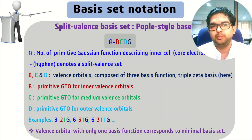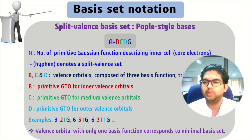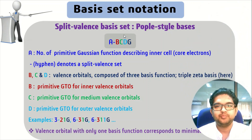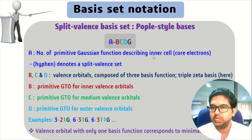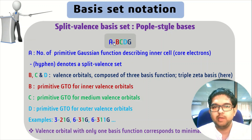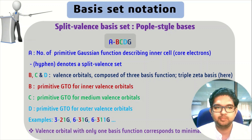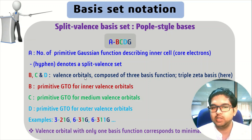The split valence basis set has a basic notation for the Pople style basis set. 'A' is the total number of primitive Gaussian functions describing the inner shell electrons, also called core electrons. The hyphen indicates the split valence — we are splitting the valence and core orbital electrons. Then we have B, C, D: BCD is the valence orbital composed of three basis functions — triple zeta basis.